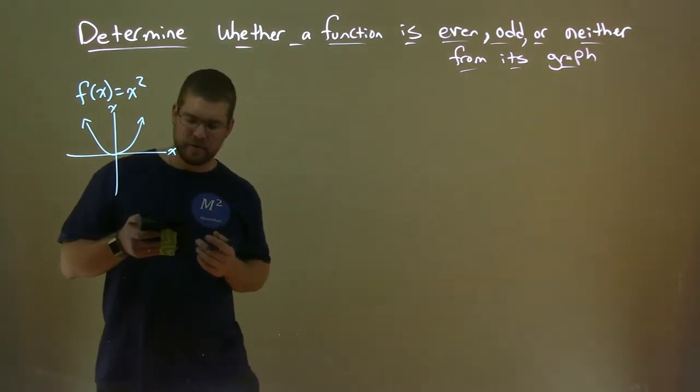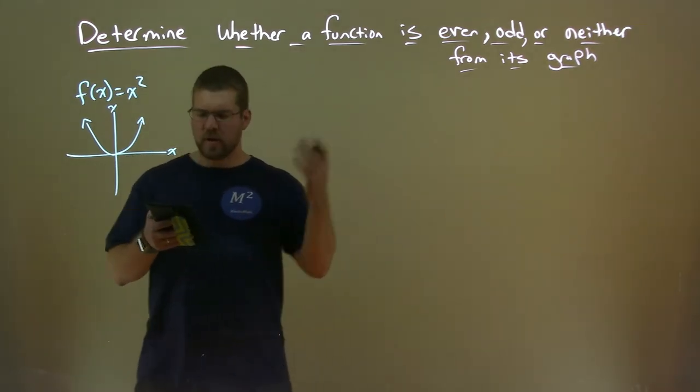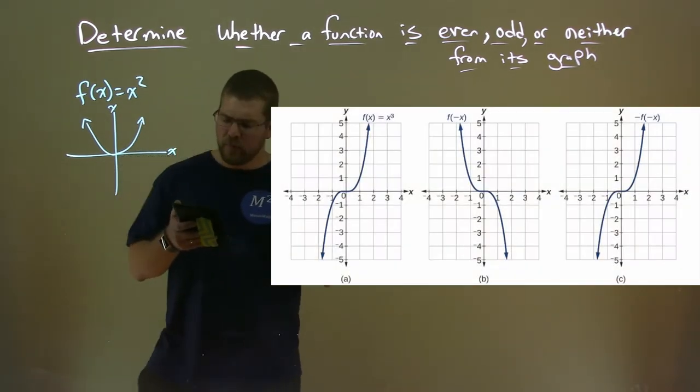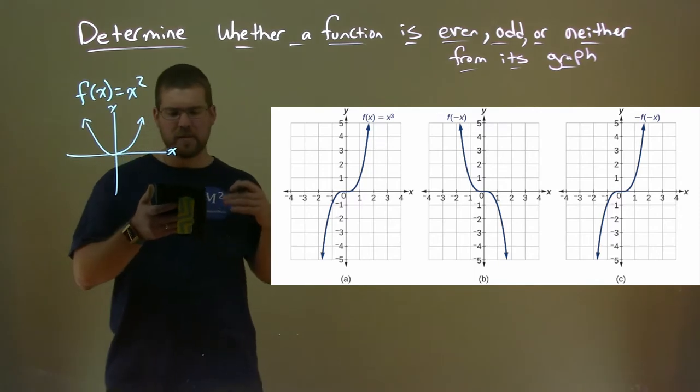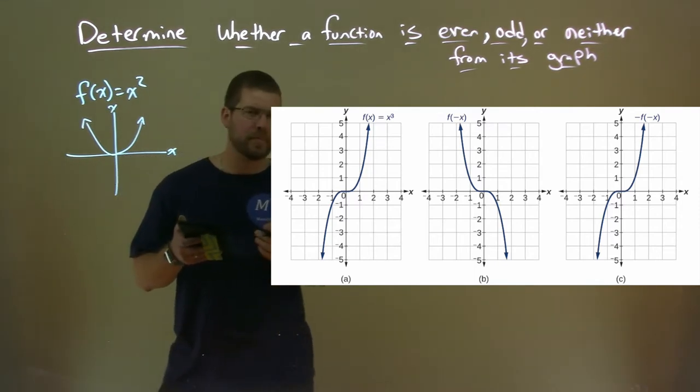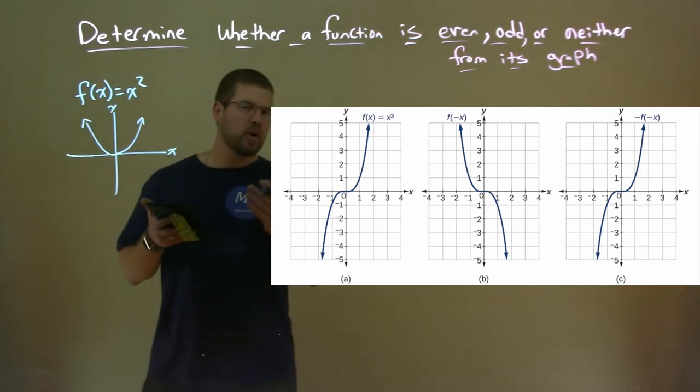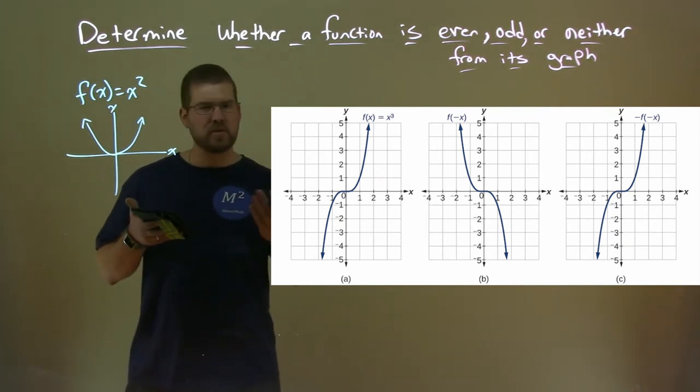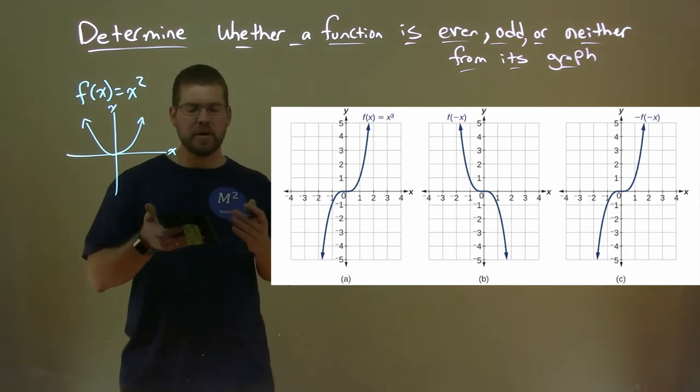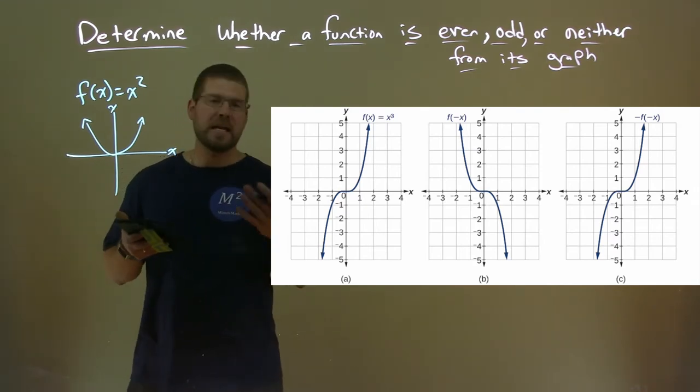But what about an odd function? Let's look at this visual. For part a, we have f(x) = x³. We reflect that over the y-axis, and notice it looks a little different. It's just flipped over, but it's not the same function, so it's not an even function.